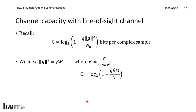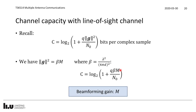For free-space LOS, the squared norm of **g** is ‖**g**‖² = M · β, where β = λ²/(4πd)². Each of the M elements has the same magnitude λ/(4πd), so the squared norm is M times β. The LOS channel capacity is C = log₂(1 + Q·M·β/N₀), showing clearly the beamforming gain proportional to M. Without multiple antennas (M=1), the capacity would have only β in the SNR with no M factor.